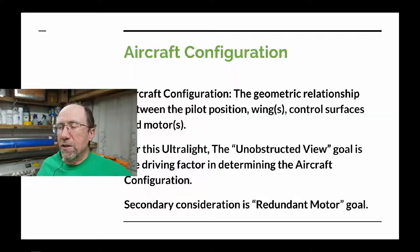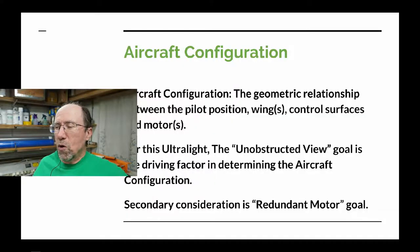There are some other considerations from the goals document that will also impact our configuration. One of them is redundancy — redundant motor, but also some other redundant features. We want redundant control surfaces. We wanted tricycle gear, which will affect the configuration. We also wanted an enclosed cockpit, which will have some effect on the configuration.